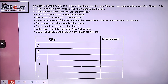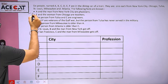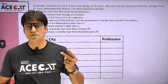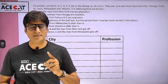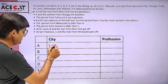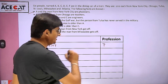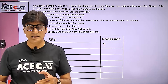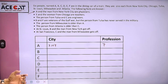Six people named A, B, C, D, E, and F are in the dining car of a train. They are one each from New York City, Chicago, Tulsa, St. Louis, Milwaukee, and Atlanta. The first clue: A and the man from New York City are physicians. Try to understand the interpretation — there are two physicians: one is A, and one is the person from New York City. This itself means A does not belong to New York, but A is a physician. The person from New York is also a physician.